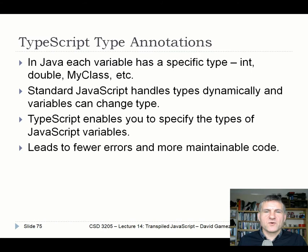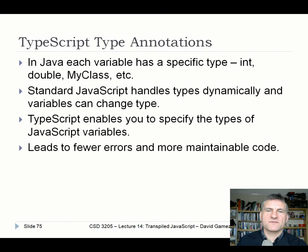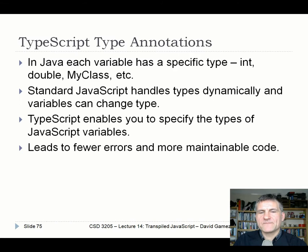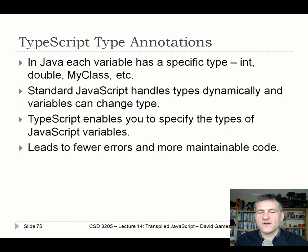Java uses types — you can't create a variable without declaring its type. Standard JavaScript handles types dynamically: you use var or let, and the JavaScript runtime decides if the variable is a boolean, number, or whatever. TypeScript lets us specify the type of JavaScript variables in our methods, functions, and variables, leading to fewer errors and more maintainable code. Personally, I think types are a sensible addition to JavaScript, particularly when working with larger programs.